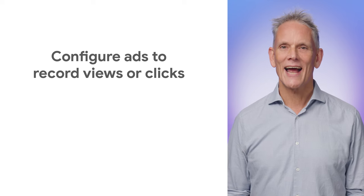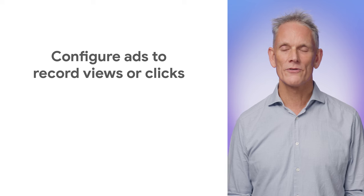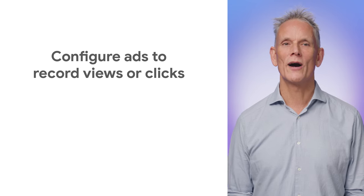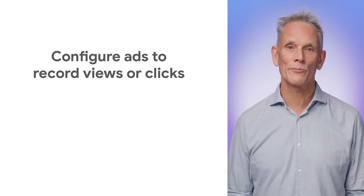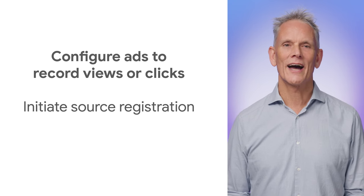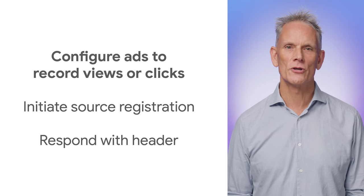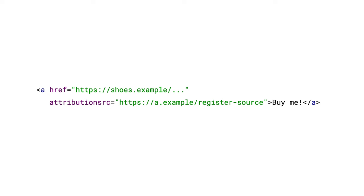On the ad side, ad tech code needs to configure ads to enable the browser to use the Attribution Reporting API to record clicks or views. There are two stages. First, configure an ad so the browser makes a request to a specified URL when there's a click or a view — in other words, instruct the browser to register an attribution event source for interactions with the ad. When an interaction results in a request, respond with a header to provide contextual data and confirm that the browser should record the attribution event. An attribution source is an ad-related event — a click or view — to which an ad tech can attach contextual reporting data, such as an ad creative ID or information about the campaign or geography. To register a link tag as a source for a click event, you can use code like this.